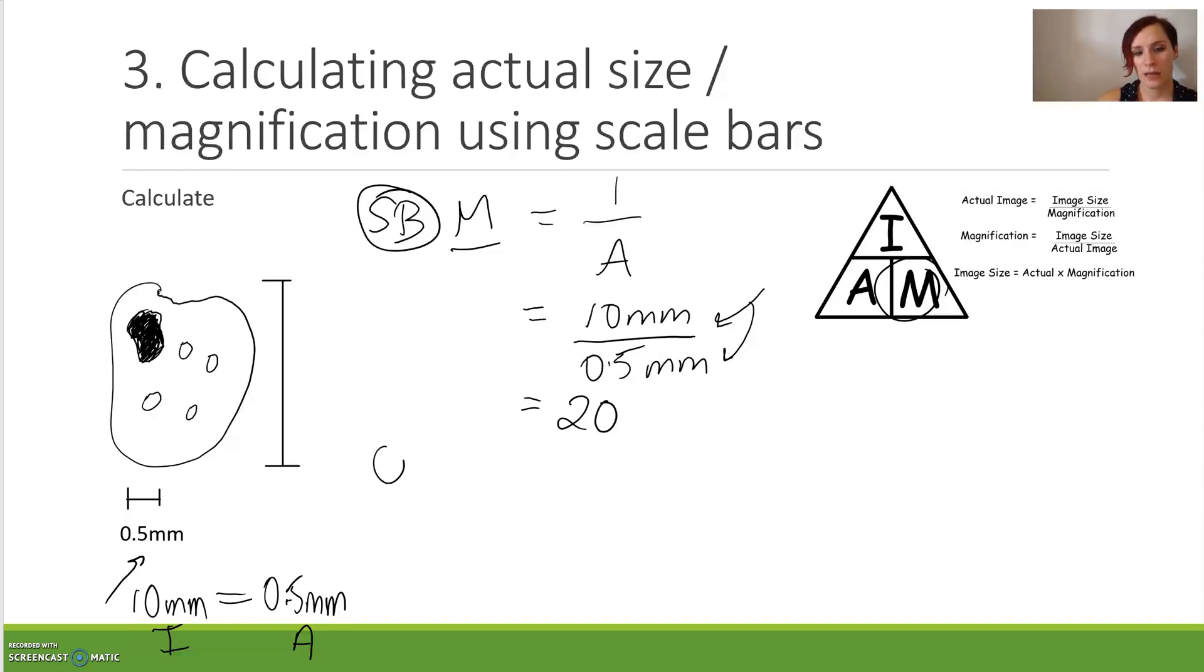Now we need to look at the object. That is our second step, O for object. What we're trying to do is calculate A for actual length. Now if we try and circle this one, this time what's left in the triangle is I divide M. So we've got an image length, which is this here, and I've measured it to be 4.5 centimeters. And we know that the magnification was on by 20.